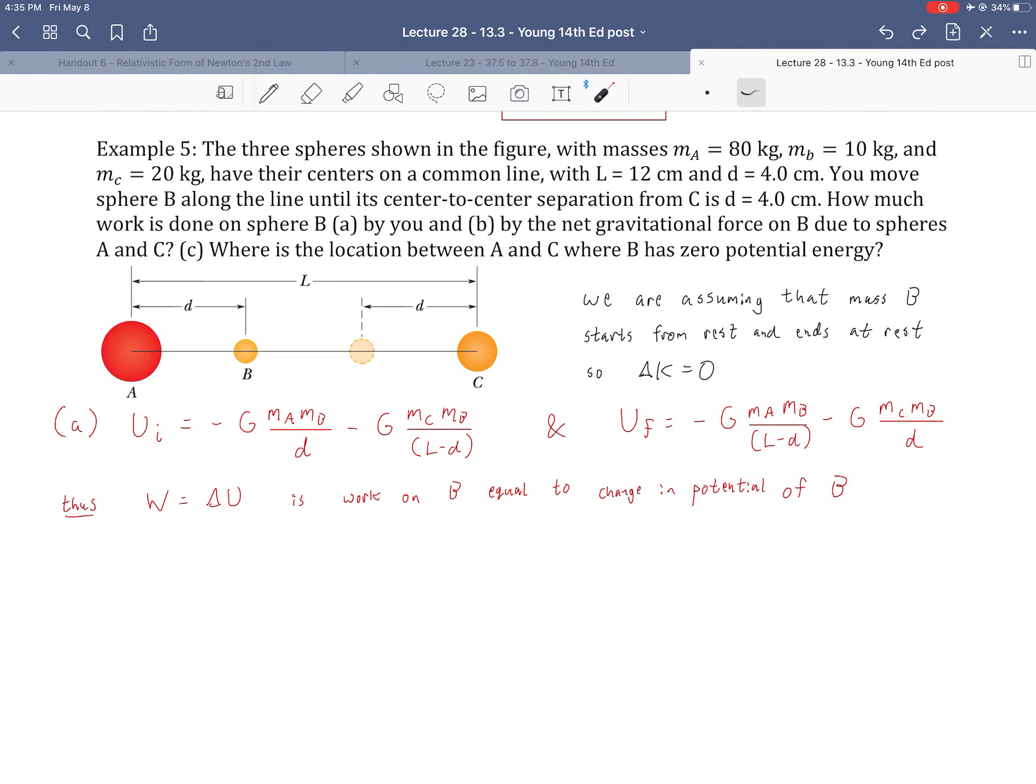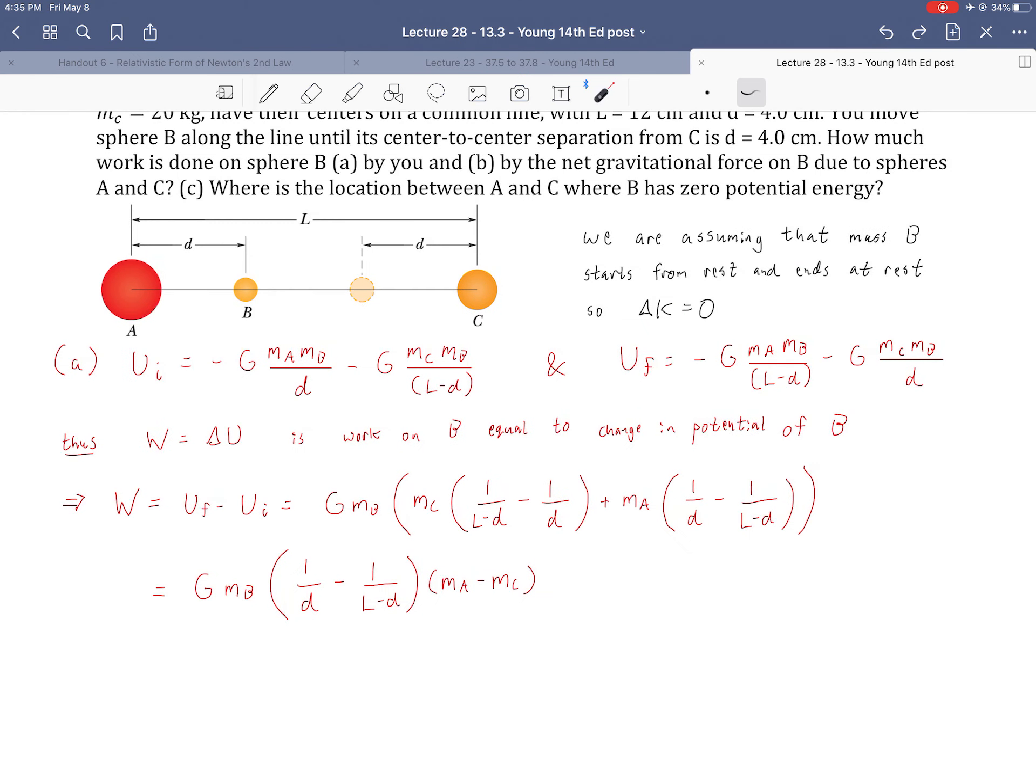So then the external work is just the change of potential energy. Notice it's not the work done by gravity. This is the work on B, and it equals the change. And so here we have work equals U final minus U initial. Plug in all the values, do some algebra. Basically these can be like terms if we just switch the order of them. If I factor a negative out of this term, so I have a negative in front of M_C, then it would look just like this. And so then that's what I do. This becomes my like term and I factor out M_A minus M_C. Because I factor the negative out. So two steps of factoring. Factor a negative, factor the sum.